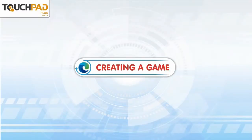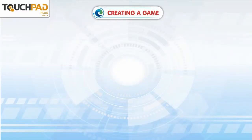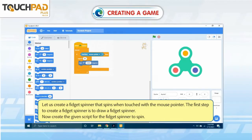Creating a game: let us create a fidget spinner that spins when touched with a mouse pointer. The first step to create a fidget spinner is to draw a fidget spinner.